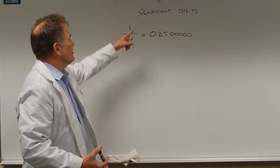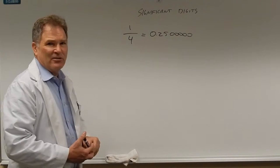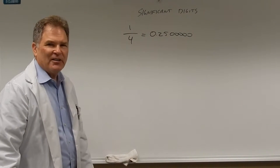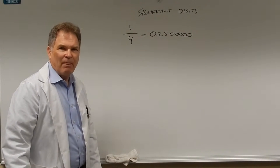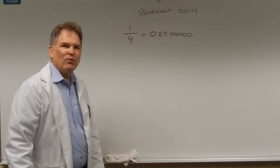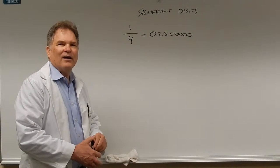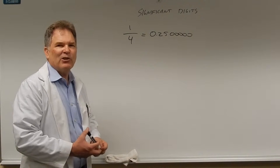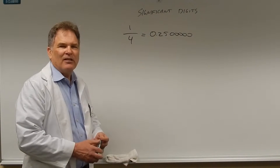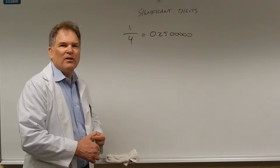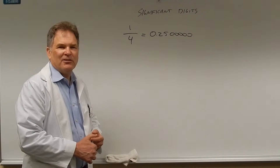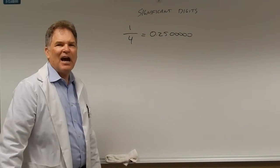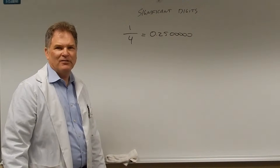Now we can start talking about significant digits. All significant digits are a code — whoever made the measurement writes down the answer with a certain number of digits to tell the next person how accurate that measurement was.